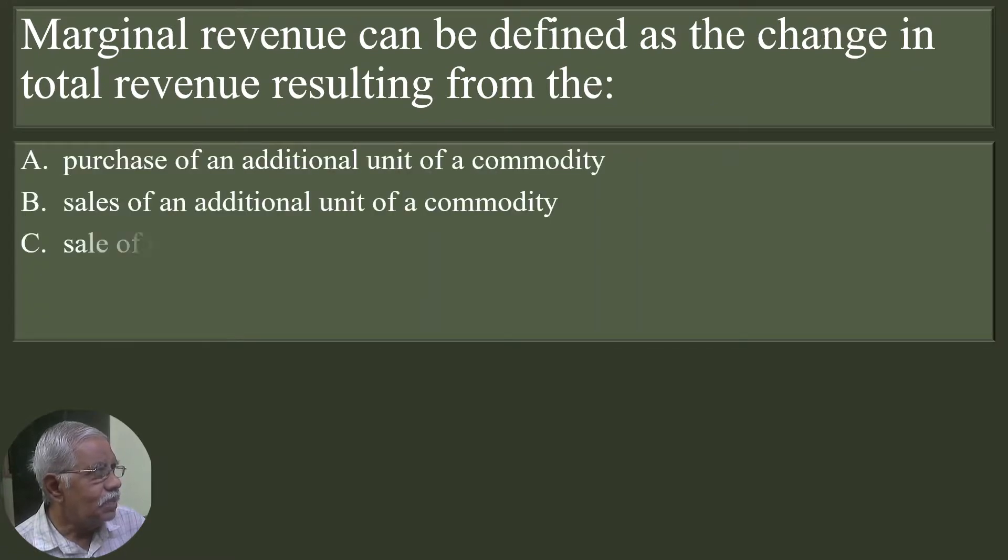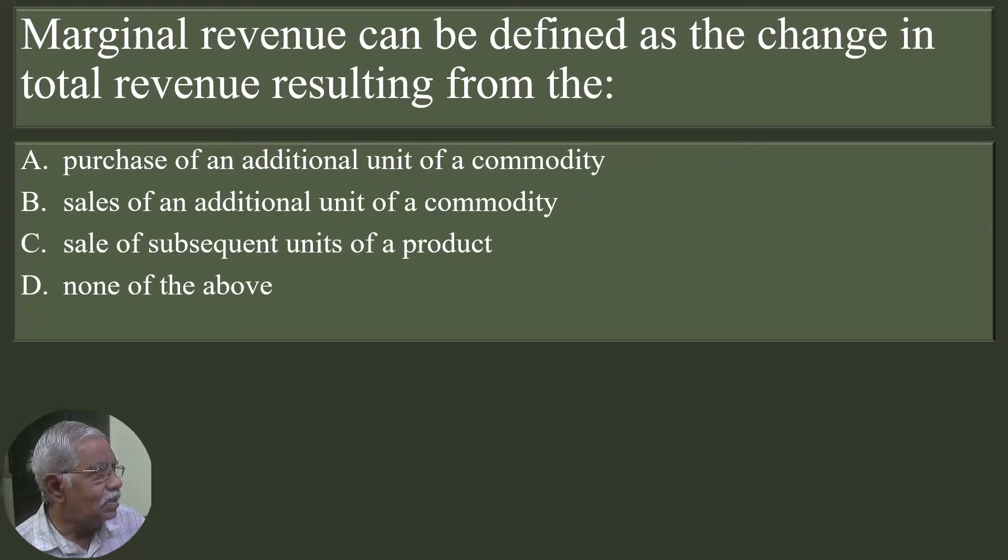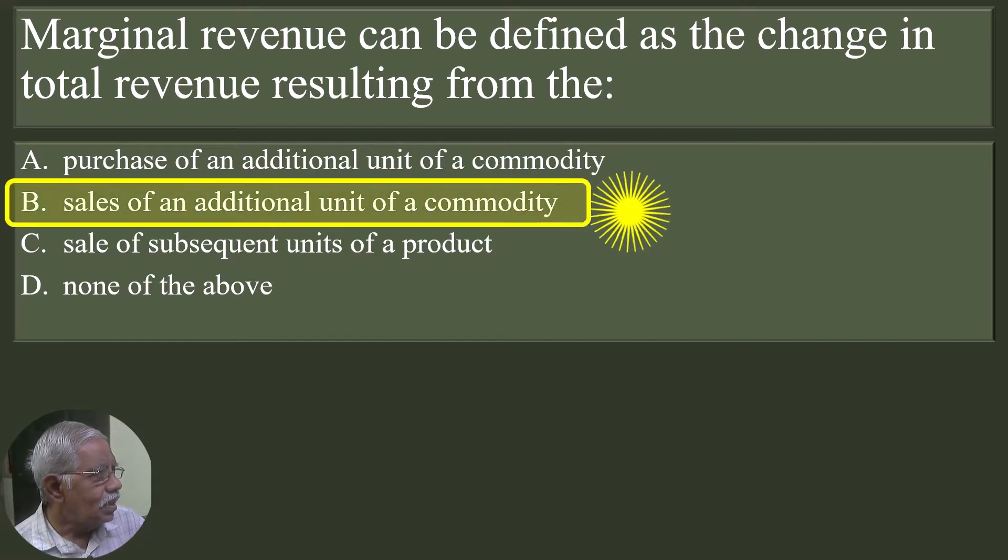Marginal revenue can be defined as the change in total revenue resulting from the purchase of an additional unit of a commodity, sales of an additional unit of a commodity, sale of subsequent units of a product, none of the above. Sales of an additional unit of a commodity is the correct answer.